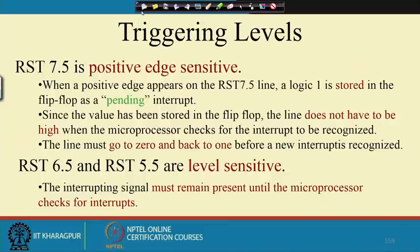When a positive edge appears on the RST 7.5 line, a logic 1 is stored in the flip-flop as a pending interrupt. The line no longer needs to be kept high. For edge triggering, if another edge has not come — that is, if the line has not gone down to 0 and risen back to 1 — that will not be taken as a new interrupt, which avoids the problem of re-interruption seen with level-triggered interrupts.